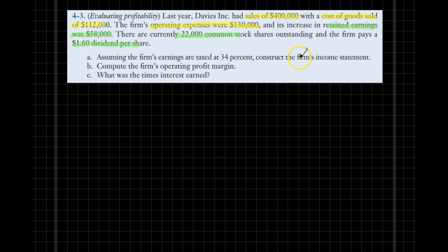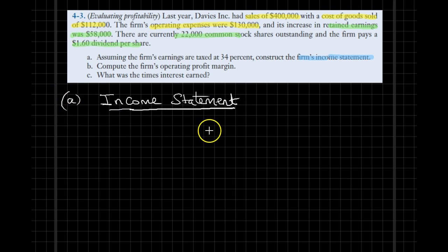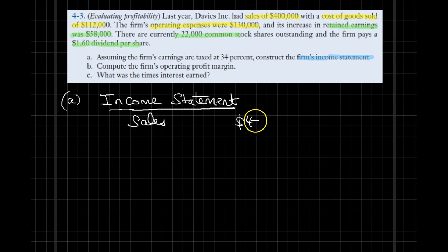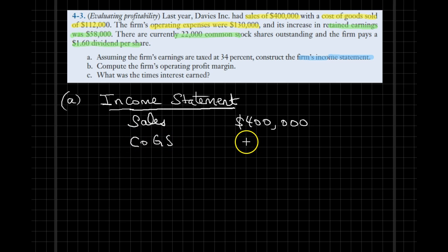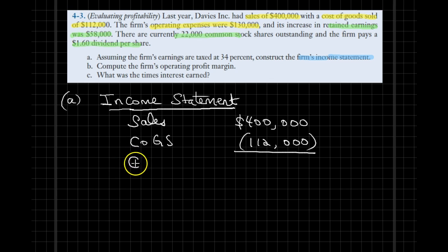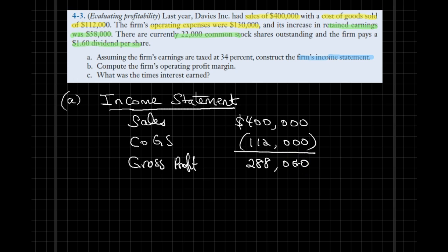Given all these, the problem first asks us to construct an income statement. We start with the income statement for part A. On top of our income statement, as you all remember, we have our sales figure — in our case, sales is $400,000. Next we have cost of goods sold, which is given as $112,000. The difference between sales and cost of goods sold gives us our gross profit, which is $288,000.